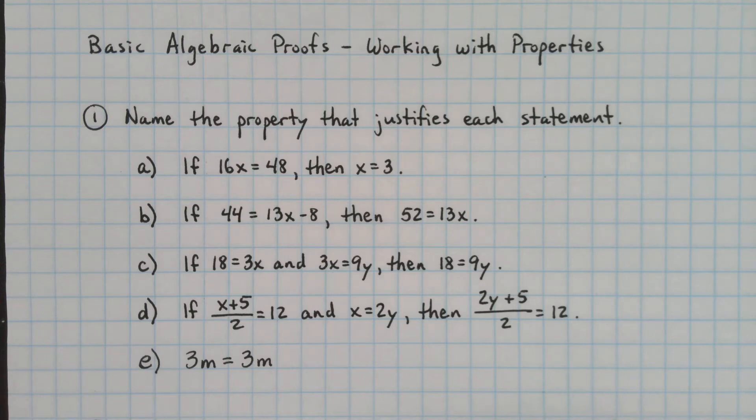In example 1 here, we're going to name the property that justifies each statement. And the best way to do that is to see how it changes from the left side to the right side, from the if portion to the then portion of the statement.